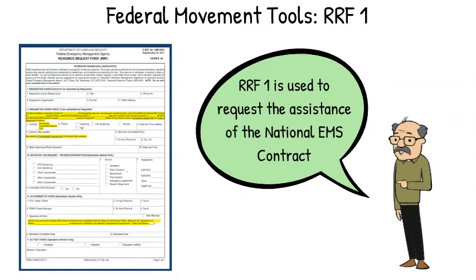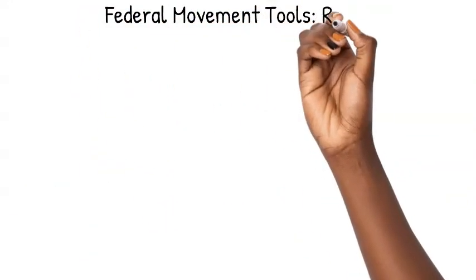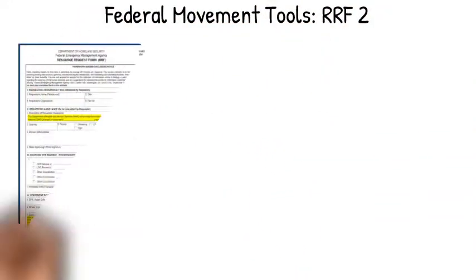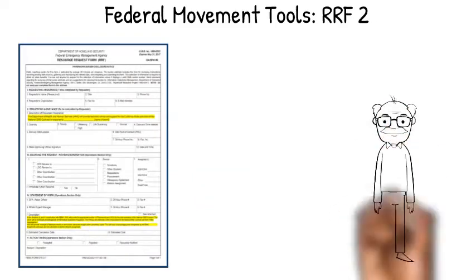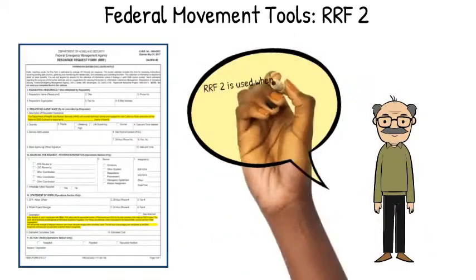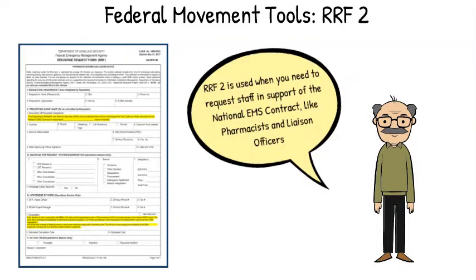To activate the National EMS Contract, the first step is to fill out RRF1 along with our federal movement tools. This form specifies how many ambulances you need, how many paratransit vehicles you need, when you need them, and where you need them.